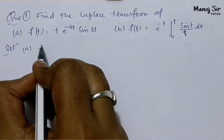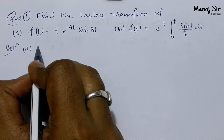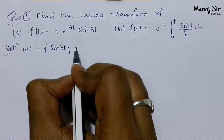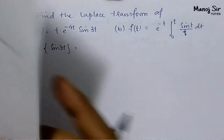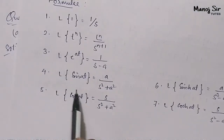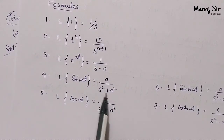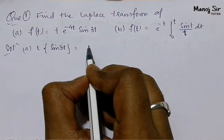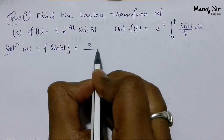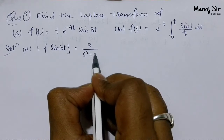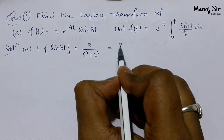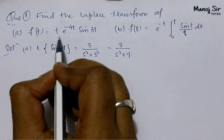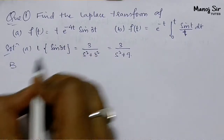Let us find the Laplace of sin 3t. The formula for L{sin at} = a / (s² + a²). Here a = 3, so L{sin 3t} = 3 / (s² + 9).